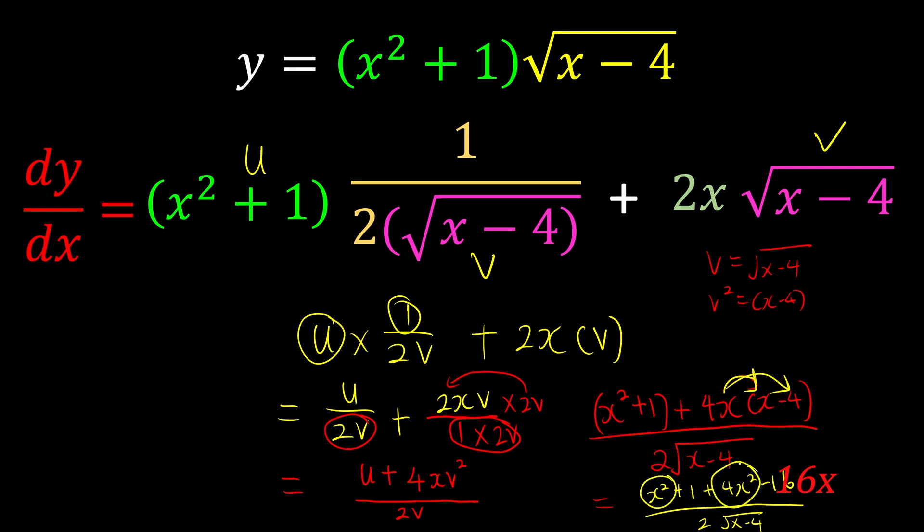We have x² + 1 + 4x² - 16x over 2√(x - 4). But x² and 4x² can be simplified together. I like it on the left-hand side: 5x².